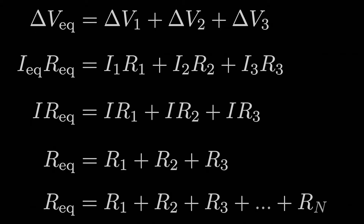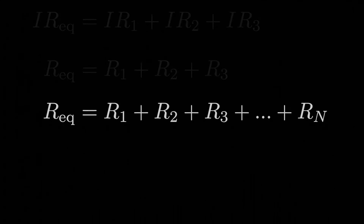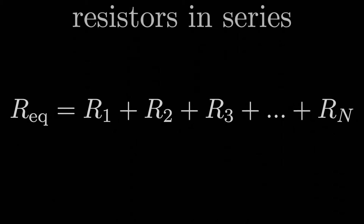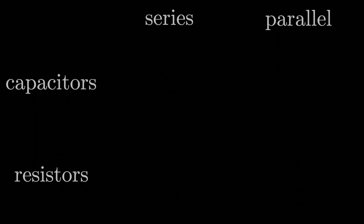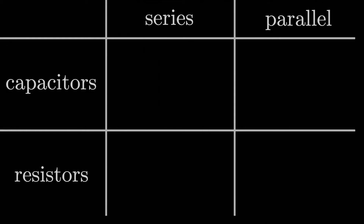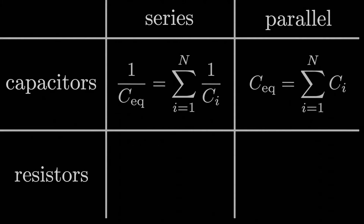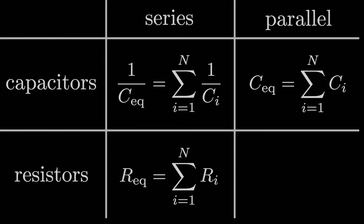The same logic extends to N resistors in series. We saw a similar pattern when dealing with capacitors in parallel — the capacitances added up to give you the equivalent capacitance. It's quite interesting that there's that kind of flip-flop between series resistors and parallel capacitors. So what do you think resistors in parallel will look like? Let's find out.